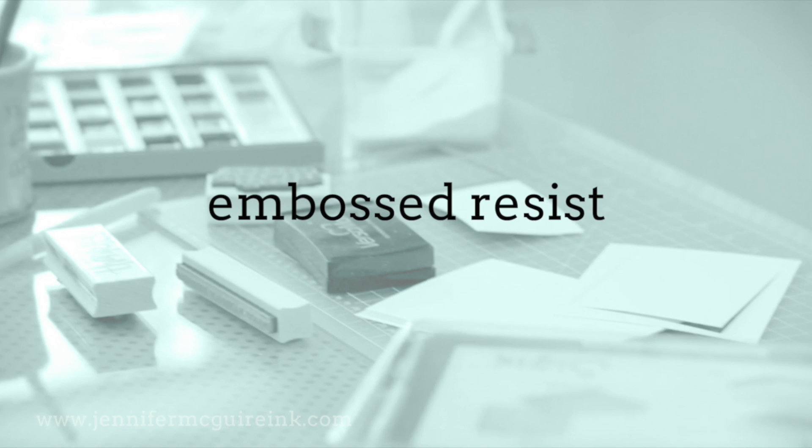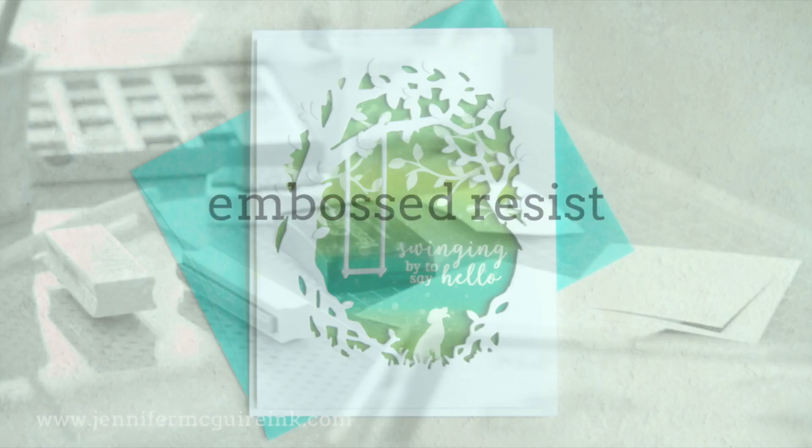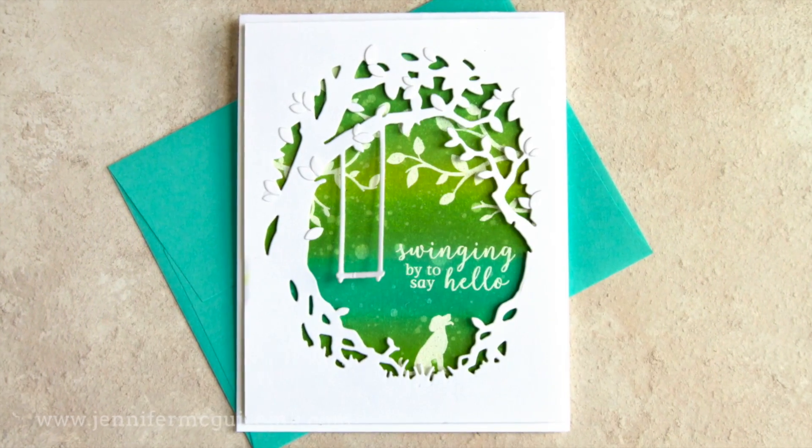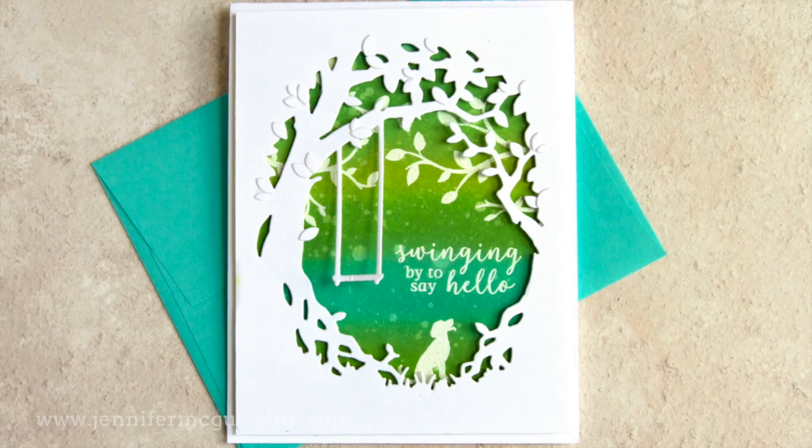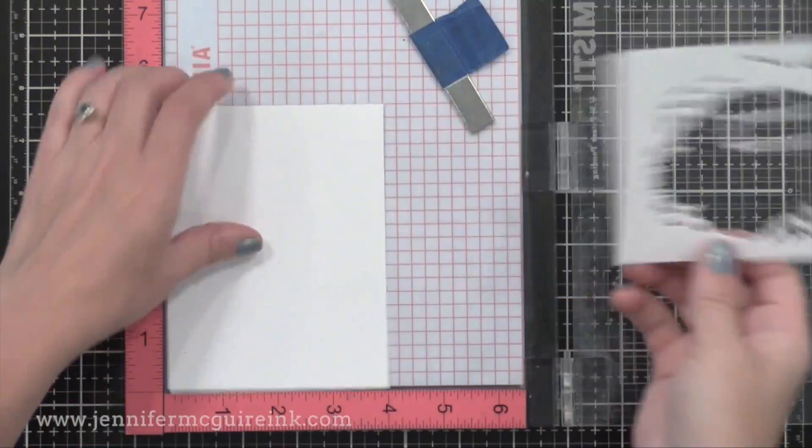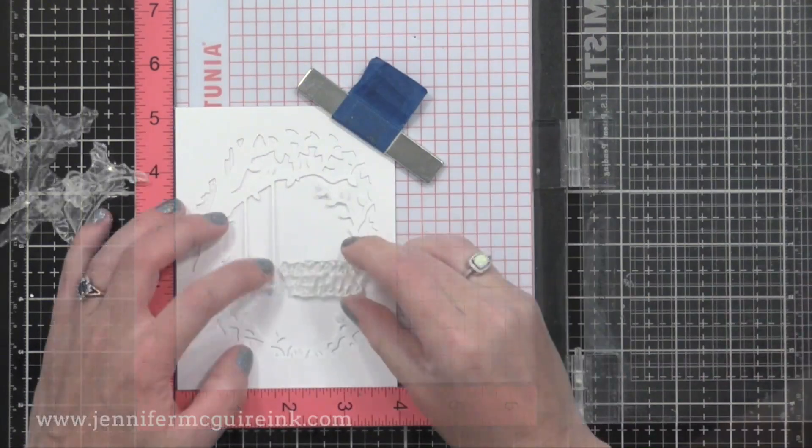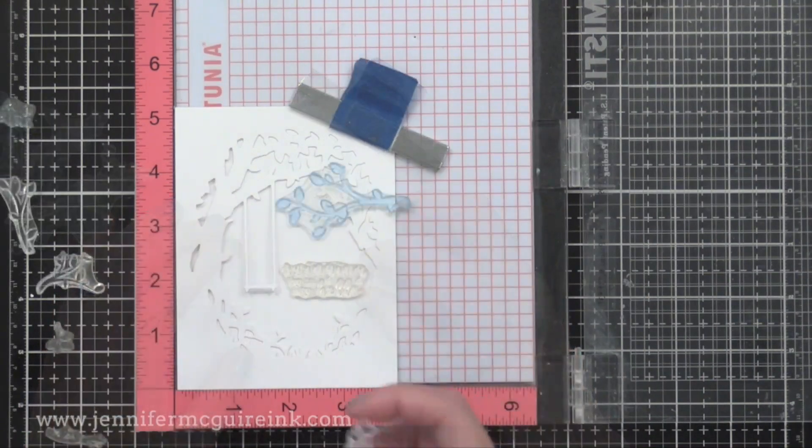Next we have embossed resist. This is a very common form of resist where you do heat embossing and then apply ink on top. We did this before with the black ink technique, but this time I'm using white embossing powder instead of clear.